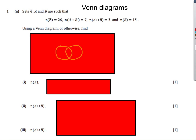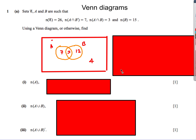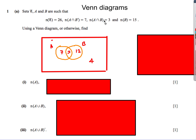Here's the first question. The universal set — that squiggly E symbol — contains sets A and B. The notation tells us: n(ξ) = 26, n(A ∩ B') = 7, n(A ∩ B) = 3, and n(B) = 15. The question says to draw a Venn diagram, so let's do that.